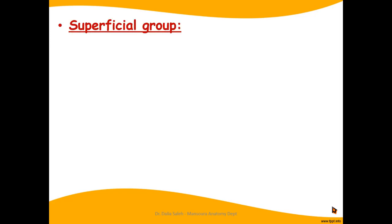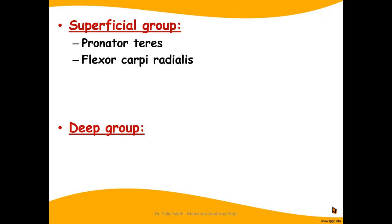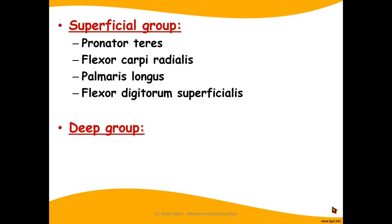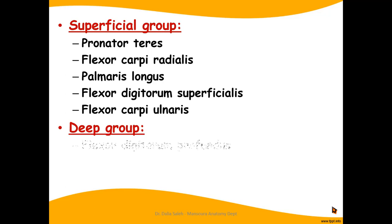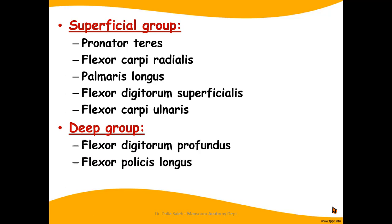The muscles of the front of the forearm are arranged into two groups: a superficial group and a deep group. The superficial group includes the pronator teres, the flexor carpi radialis, the palmaris longus, the flexor digitorum superficialis, and the flexor carpi ulnaris. The deep group includes the flexor digitorum profundus, the flexor pollicis longus, and the pronator quadratus.